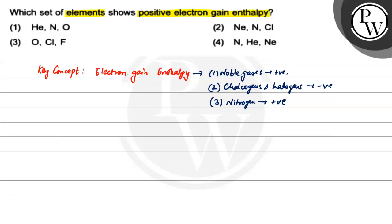So, let's check. The first option says helium, nitrogen and oxygen. Chalcogen's oxygen comes in, so it will have negative electron gain enthalpy. So option 1 is not the correct option.